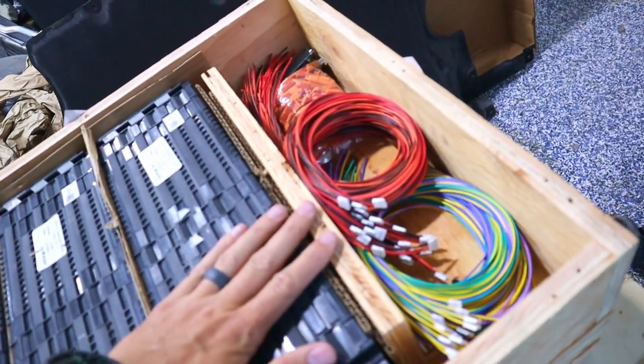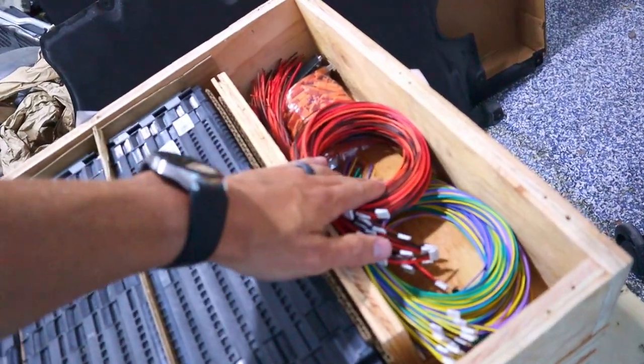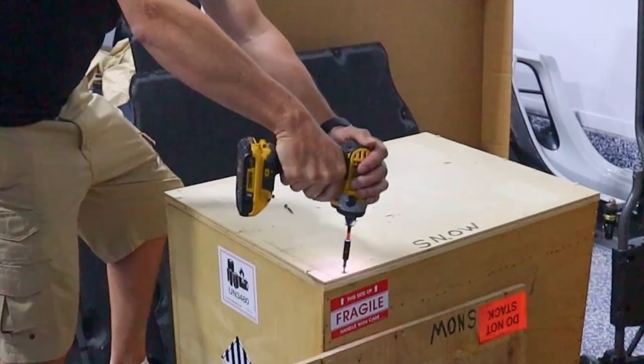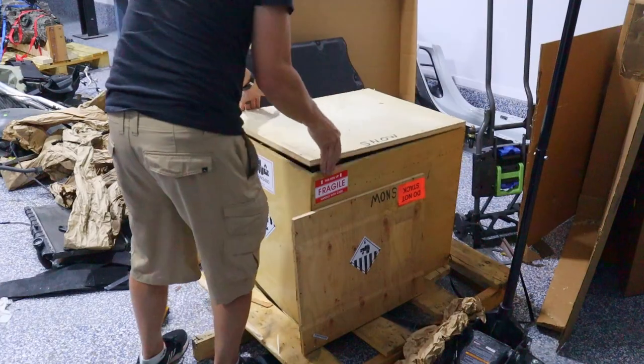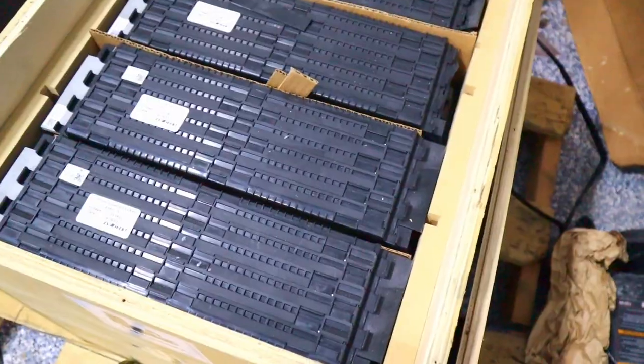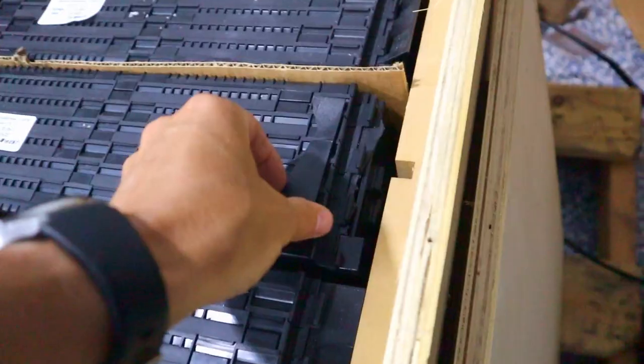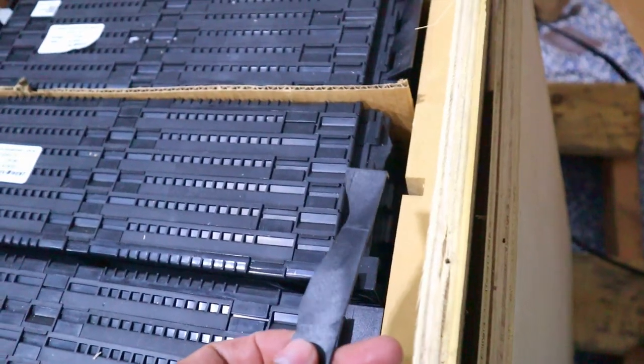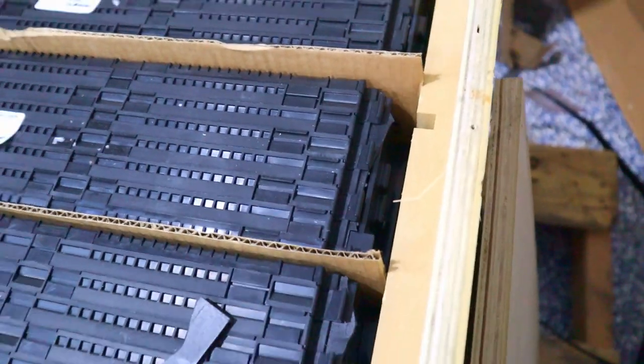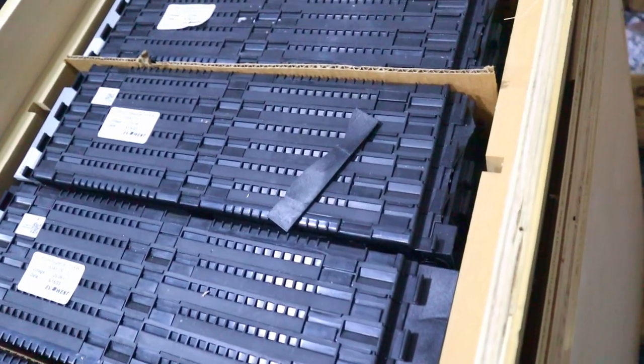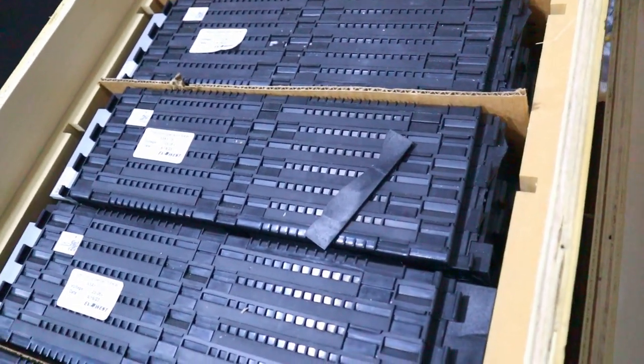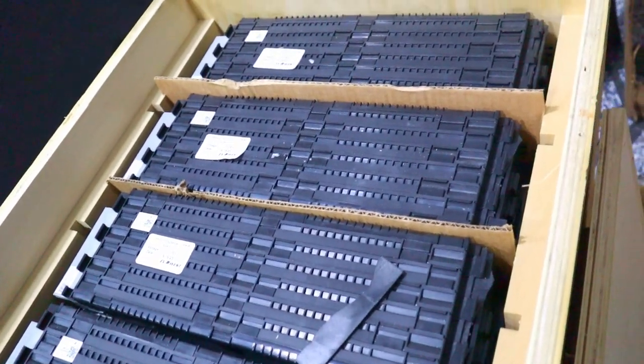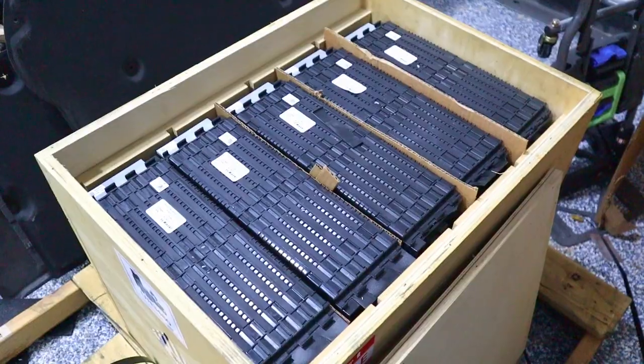I believe these are going to be thermistors and cell taps for the battery modules. This one looks like it's got more of the same. I did notice some of the battery modules did not make it all the way intact. I don't know if those are important features. Looks like this one's gone too.